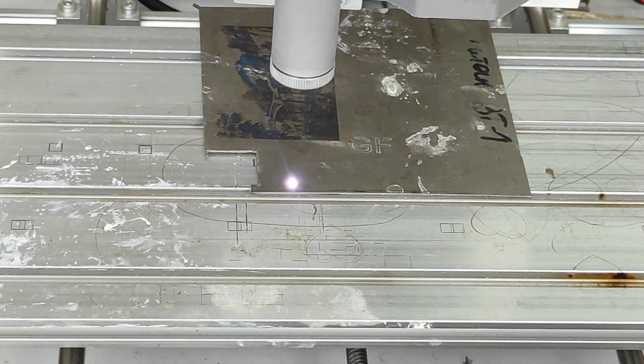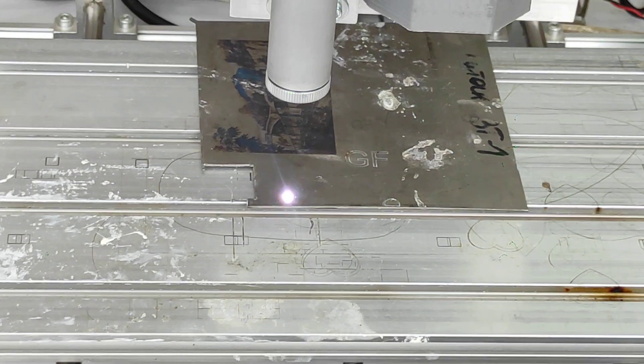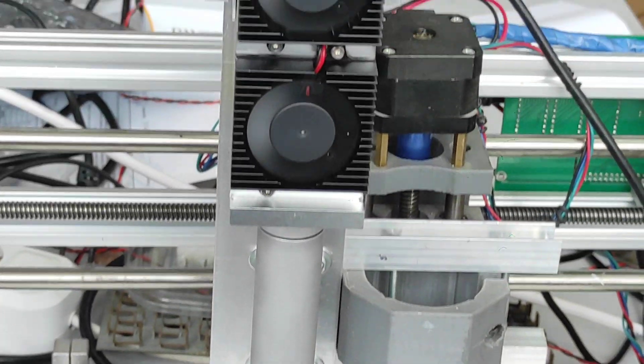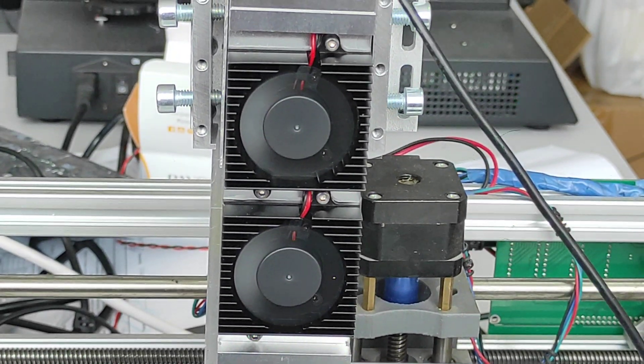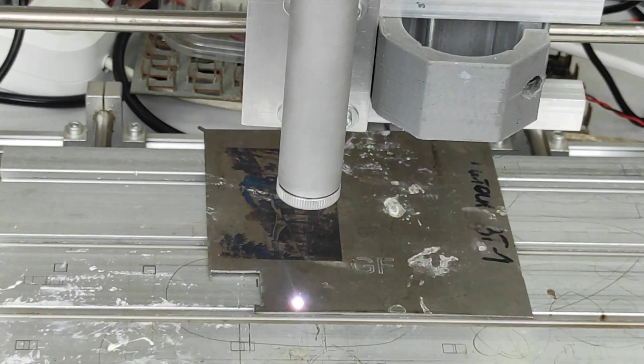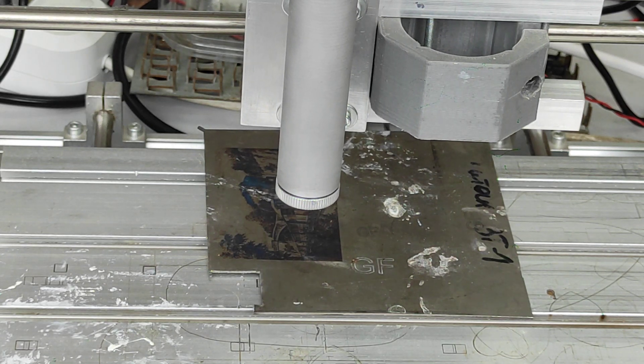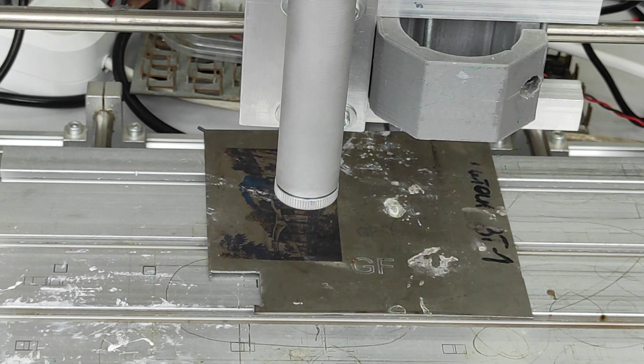Like I said we use Lightburn software and it's installed on CNC 3018 machine and we upgraded the board to MakerBase and uploaded a new firmware, the firmware is GRBL 1.1h and it's really good.